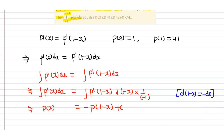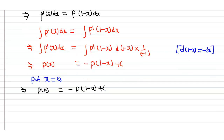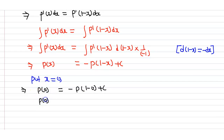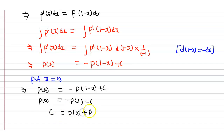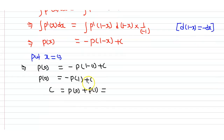This implies p(x) is equal to minus p(1 minus x) plus c. To find the value of constant c, put x equal to 0. That implies p(0) equals minus p(1 minus 0) plus c, so p(0) equals minus p(1) plus c. Therefore c equals p(0) plus p(1), which is 1 plus 41, equal to 42. So c is equal to 42.